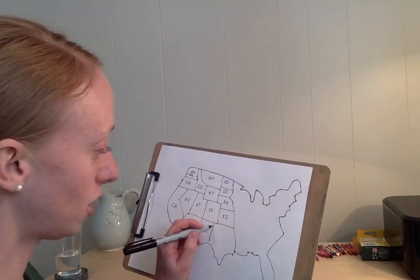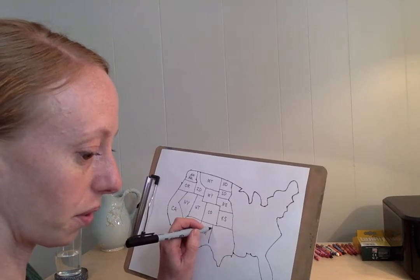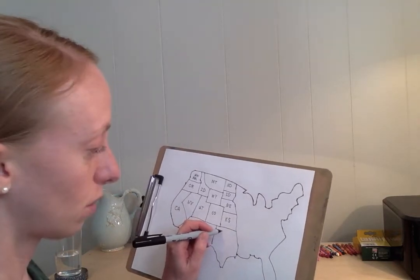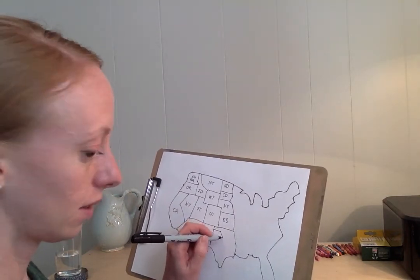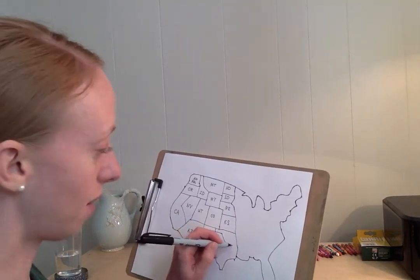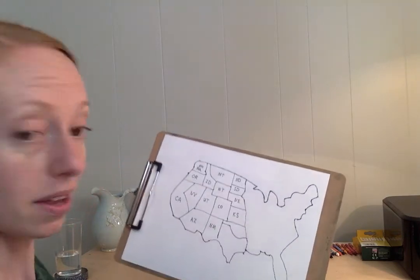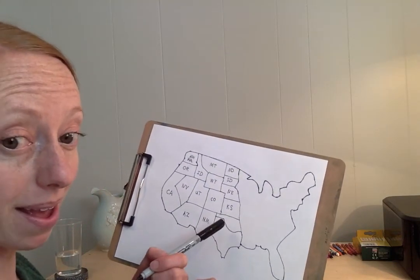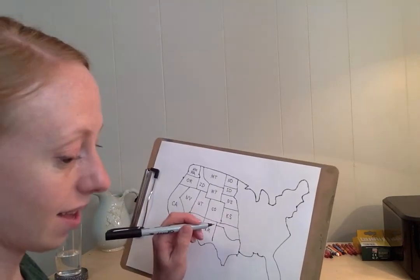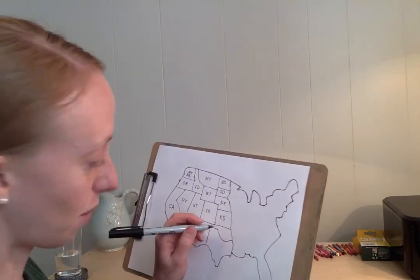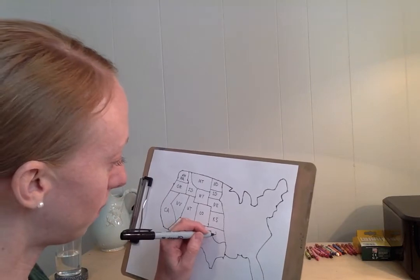Then draw another line under Kansas, touching New Mexico, and go straight over, scoop down and over — it's kind of like a pan right there — and that is Oklahoma.